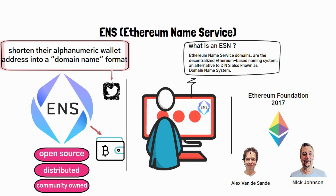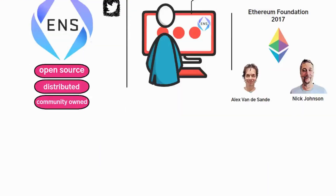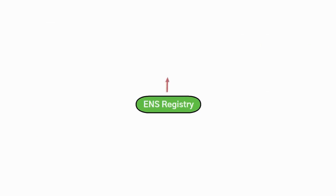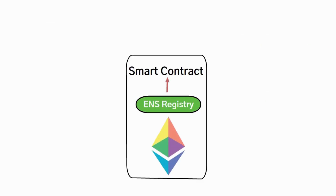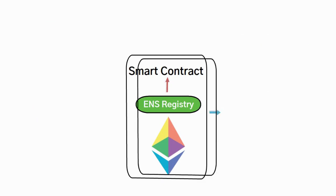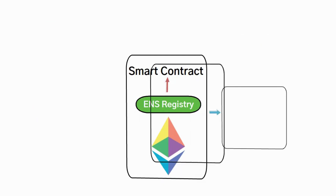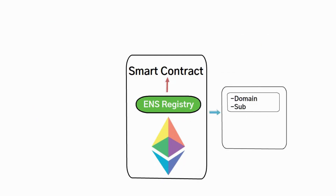At its core, ENS comprises two main components. Firstly, there is the ENS registry, which lives in a smart contract running on the Ethereum blockchain and has a record of all domains and subdomains, detailing the owner, resolver, and caching time to live for all records under that domain.